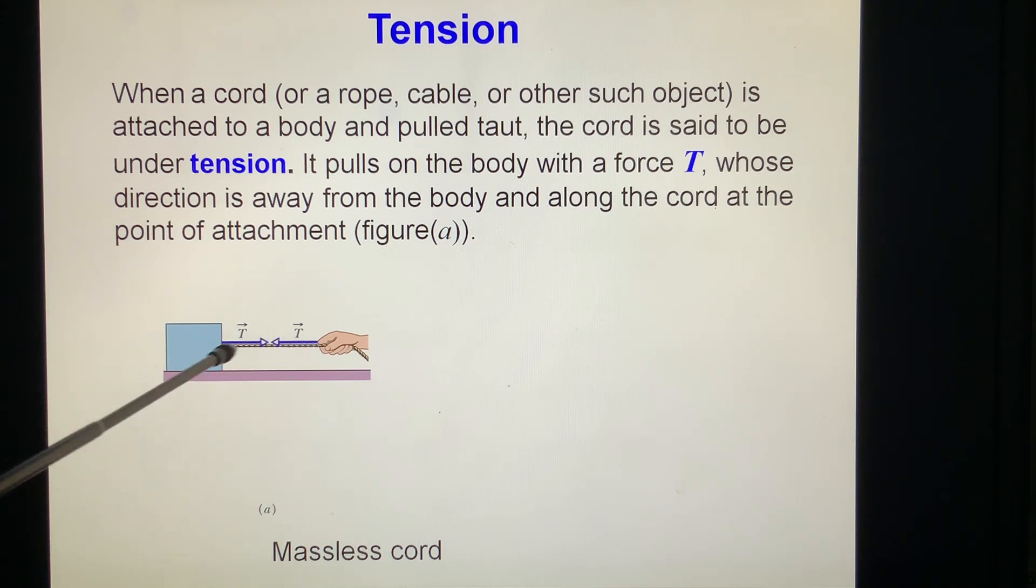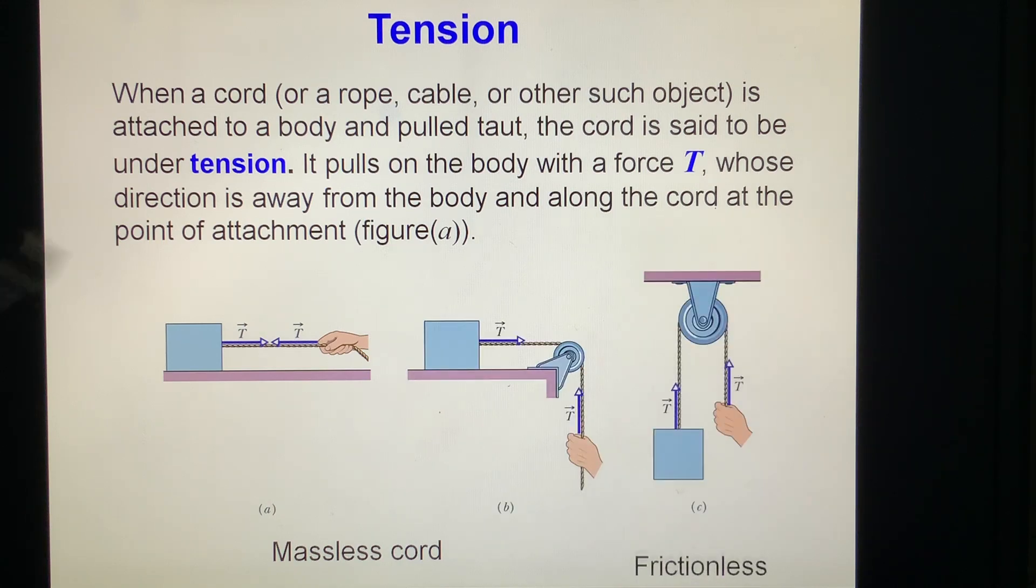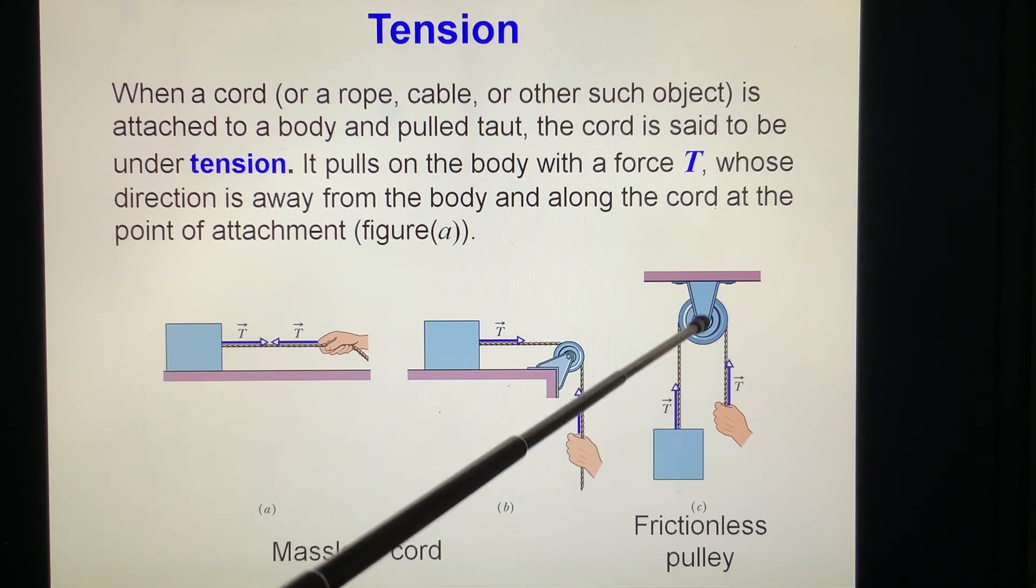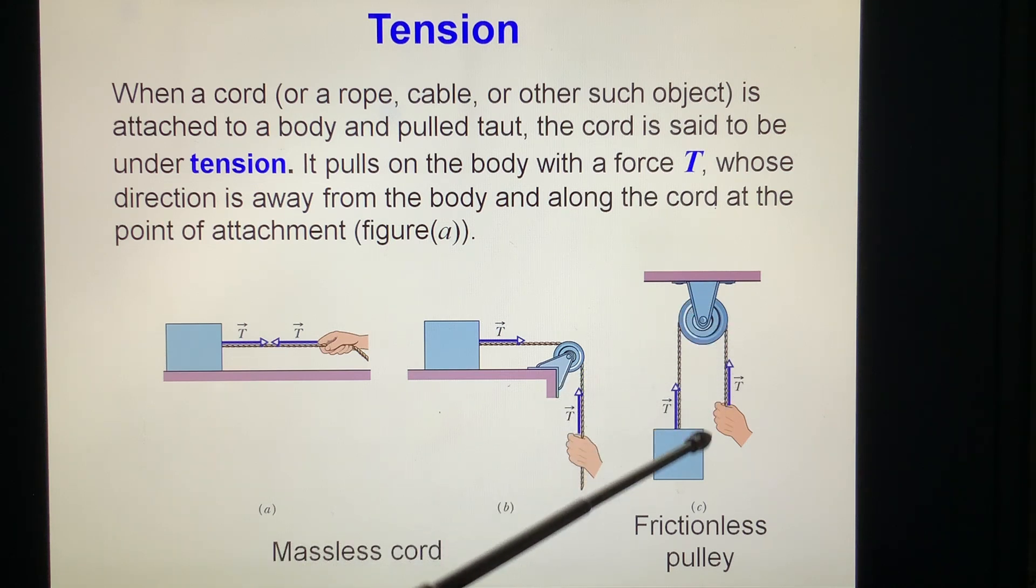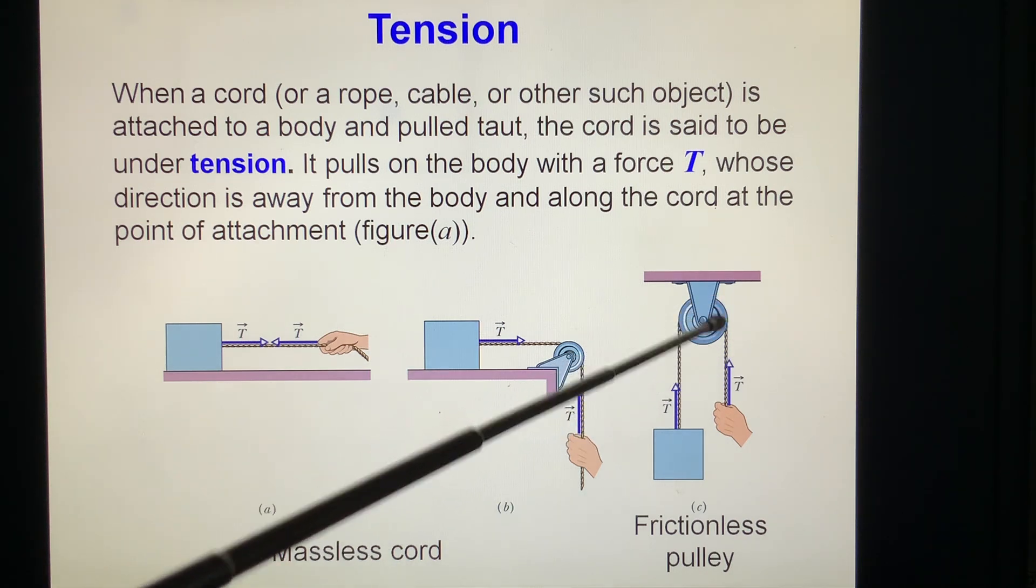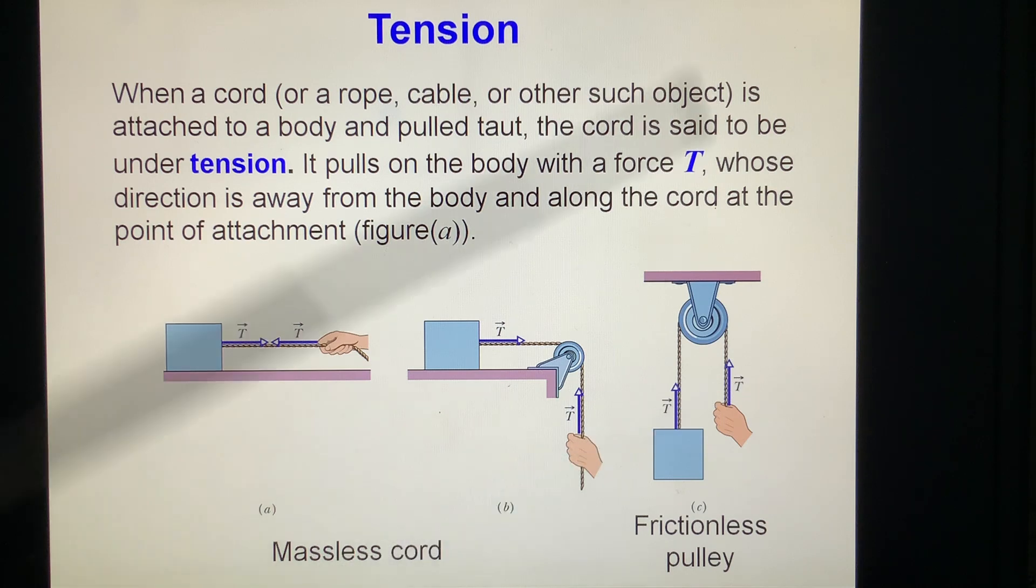The cord is massless in our study. Then you see, this tension is equal to this tension. This tension is equal to this tension. This tension is equal to this tension, because they are frictionless and they are light. If they are not frictionless, they are not light, that would be different.